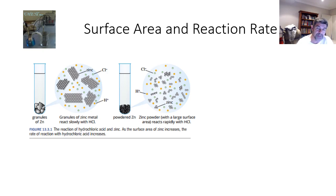In the diagram that I've pinched from our Pearson textbook, you can see that we have on the left hand side some granules of zinc, so relatively large pieces of zinc. On the right hand side we have powdered zinc, so very small, fine, tiny particles of zinc.